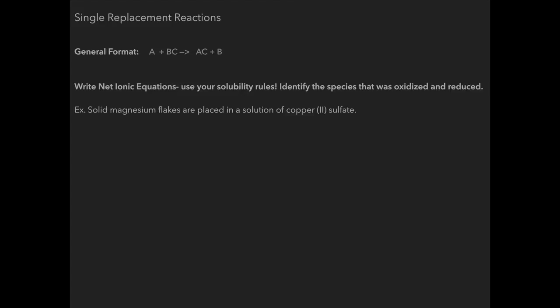Notice here it's asking me to write the net ionic equation and to identify what's being oxidized and reduced. So when I start out I have solid magnesium which means I just have Mg and it's going to react with copper two sulfate which would be CuSO4. Magnesium, a positive always kicks out a positive, a negative kicks out a negative. So magnesium the only thing it can kick out is copper.